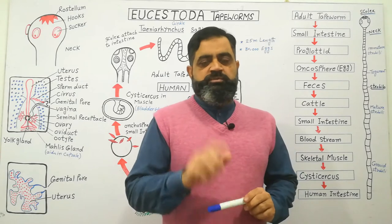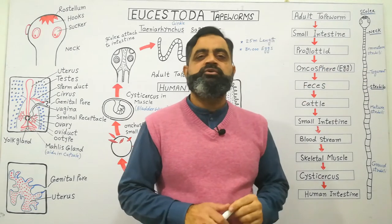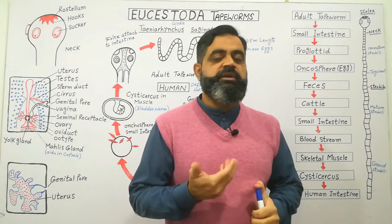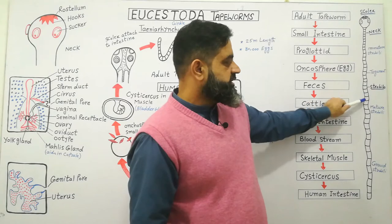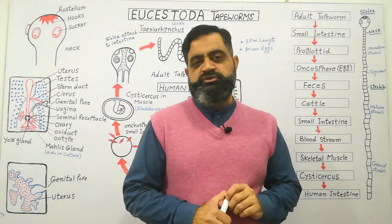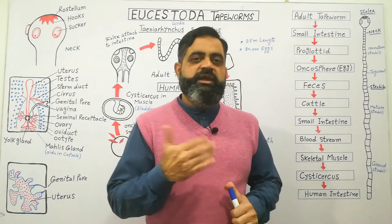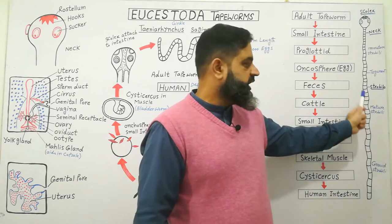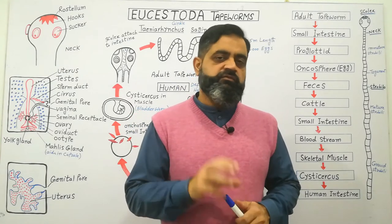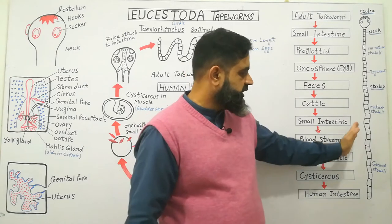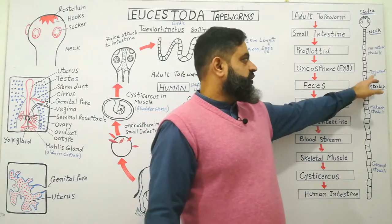The body of the tapeworm, which is the strobula, can be divided into three main parts. Just behind the neck there is the immature strobula, which usually does not have reproductive organs — they are developing. A little further is the mature strobula, where proglottids contain mature male and female reproductive organs. The last portion is known as the gravid strobula, because it is full of eggs — gravid means pregnant, full of eggs, just like a bag of eggs.